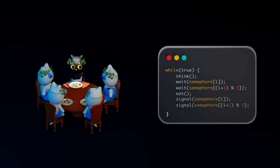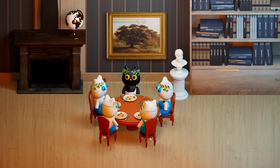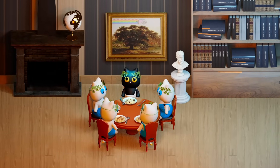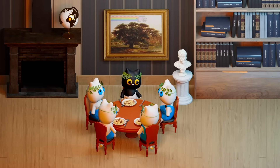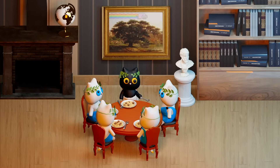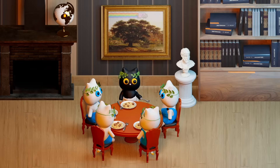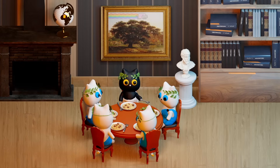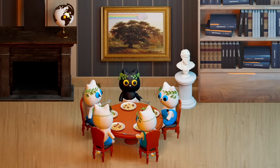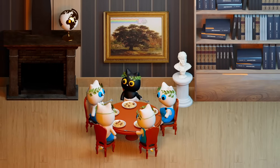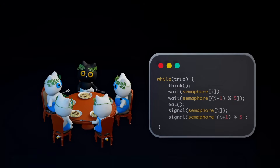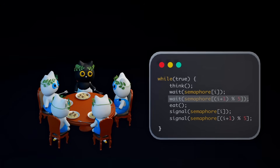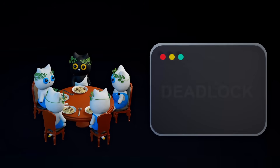Seems to work, right? Except it doesn't. For simplicity, say the table represents a single-core CPU, with the 5 philosophers representing 5 processes scheduled to run one at a time in some arbitrary order. Imagine the case where philosopher 0 starts by picking up his left fork, but before he can pick up his right fork, a series of events happen. Philosophers 1, 2, 3, and 4 are scheduled to act and pick up their left forks before their right fork. Now when philosopher 0 tries to pick up his right fork, it is impossible as it is held by philosopher 1. All the philosophers seem stuck due to the same problem — nobody is able to obtain two forks, and their procedure does not include giving up forks before they are done eating. None of the philosophers can eat, resulting in a phenomenon known as deadlock.